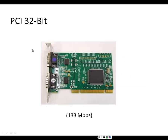One of the most commonly used network interface cards uses the PCI 32-bit bus. PCI stands for Peripheral Component Interface, and with a 32-bit bus it can send data at a theoretical maximum of 133 megabits per second. PCI 32-bit is very commonly used, particularly in desktop computers.